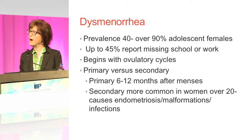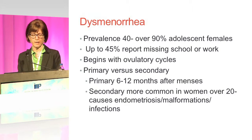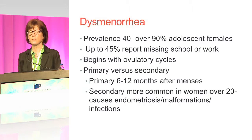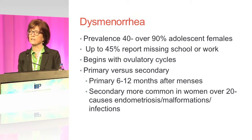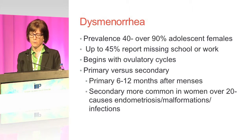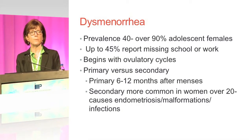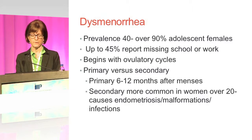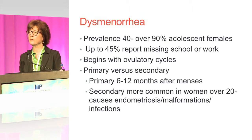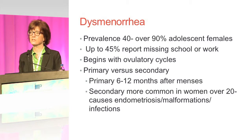There are two kinds of dysmenorrhea. There's the primary kind, which occurs basically once the period starts with ovulation. And the secondary type of dysmenorrhea, which occurs usually more often in women over 20 years of age, and again this can be secondary to endometriosis, malformations of the uterus, or infections.